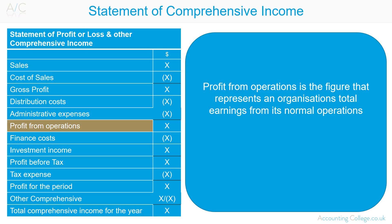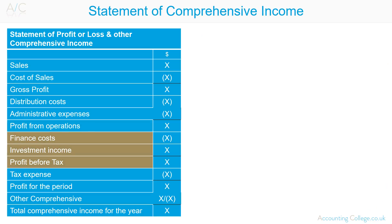Non-operational income or expense is then added or charged to the profit or loss statement to get the entity's profit before tax figure. Non-operational income and expense are items such as finance costs and investment income. Non-operational income tax expenses are then charged to get profit for the period.